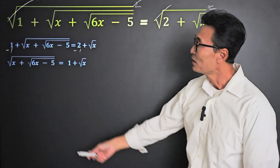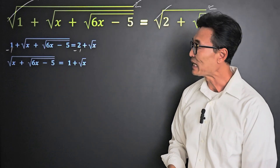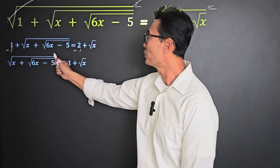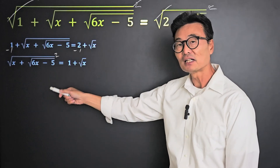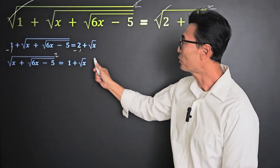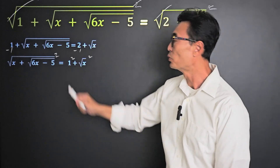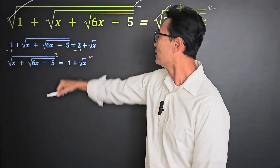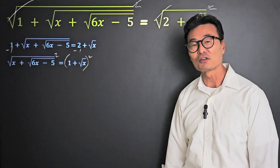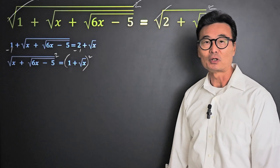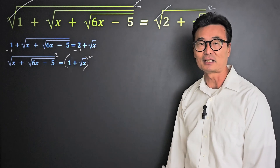Once again, to get rid of that square root sign on the left side — the outermost one — we're going to square that. If I square the left side, I have to square the right side also. What's important is that I can't just square the 1 alone; I have to put parentheses around 1 plus root x and then square it, meaning we need to square the entire right side.